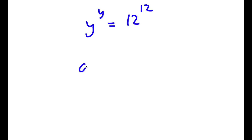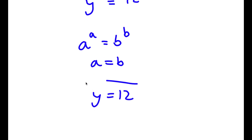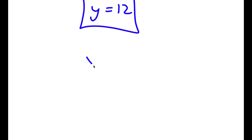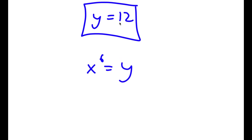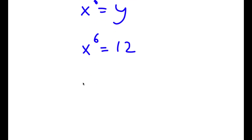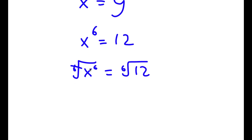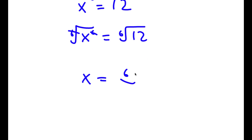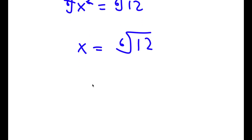Now if I have something in the form a to the power of a is equal to b to the power of b, this means that a is equal to b. So in this case, y is equal to 12. Remember we set x to the power of 6 equal to y, so now x to the power of 6 is equal to 12. Taking the 6th root on both sides, these cancel out, and x is equal to the 6th root of 12, which can also be written as x equals 12 to the power of 1 over 6.